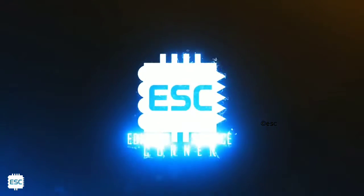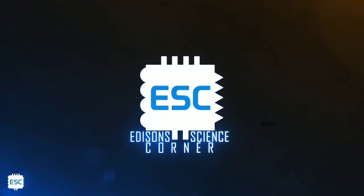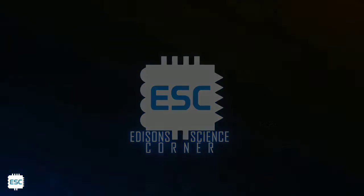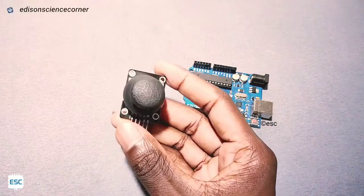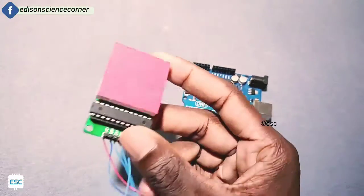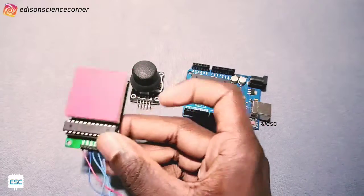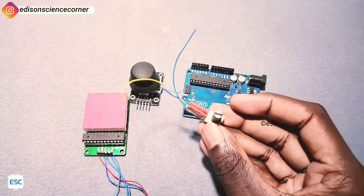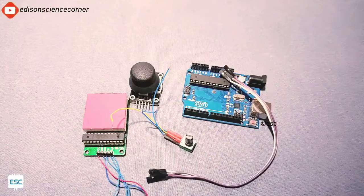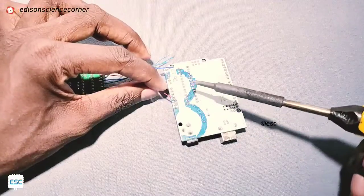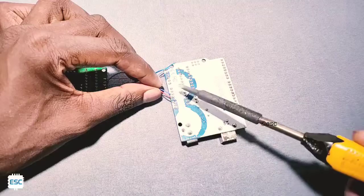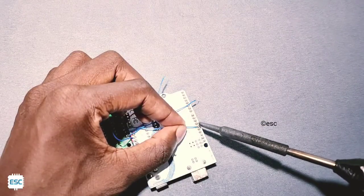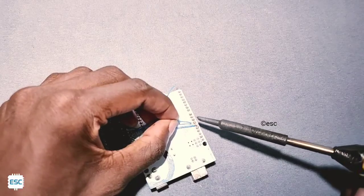For this project we need an Arduino Uno, a joystick, an 8x8 LED matrix, a 10k variable resistor, and some jumper wires. First, let's connect the 8x8 LED matrix to Arduino. Connect VCC to 5 volt and ground to ground, clock to D8, CS to D9, and DIN to D10.